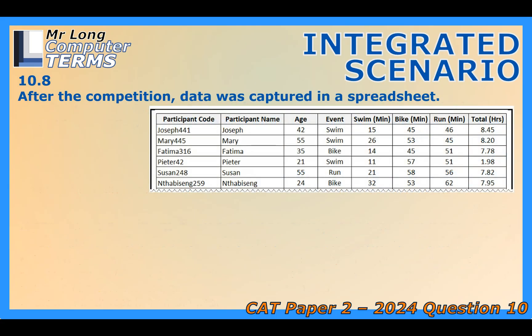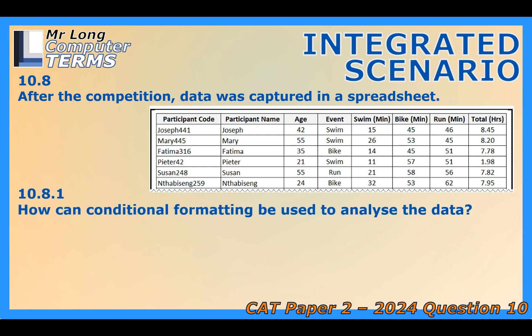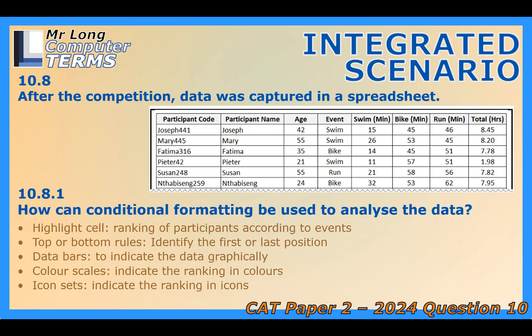Once the race is finished, all that data — times, splits — floods into a spreadsheet for final analysis. A powerful visual tool here is conditional formatting. It lets you see patterns and outliers in the data instantly and visually, without needing complex formulas. You set up rules — for example, automatically highlight any finish times over a certain limit in red, or highlight the top 10 finishers in green. You can use top or bottom rules to quickly flag the fastest or slowest times, put data bars right inside cells like little horizontal bar charts, use color scales — green for fast times fading to red for slow — and icon sets like little arrows showing if someone improved their position between checkpoints. It turns a wall of numbers into something you can understand at a glance.